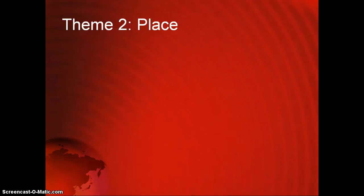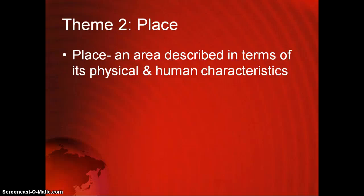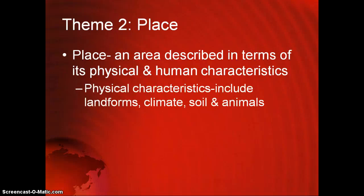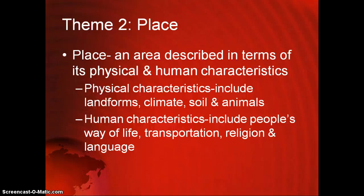Theme number two is place — probably a word you have used before but don't really think of as a theme of geography. Place describes an area in terms of its physical and human characteristics. Physical characteristics include landforms, climate, soil, and animals — things that naturally occur there. Human characteristics are anything that people bring to a particular place, including people's way of life, transportation, religion, and language.